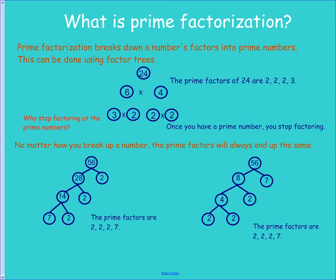Prime factorization is when we're breaking a number down into its prime numbers. We do that using factor trees. This makes it look like it's a tree. I'll draw those lines there. So the prime factors of 24 are 2, 2, 2, and 3. And why do we stop at the prime numbers? Because you can't factor a prime number any further. No matter how you break up a number, the prime factors will always be the same. Let's take a look over here.